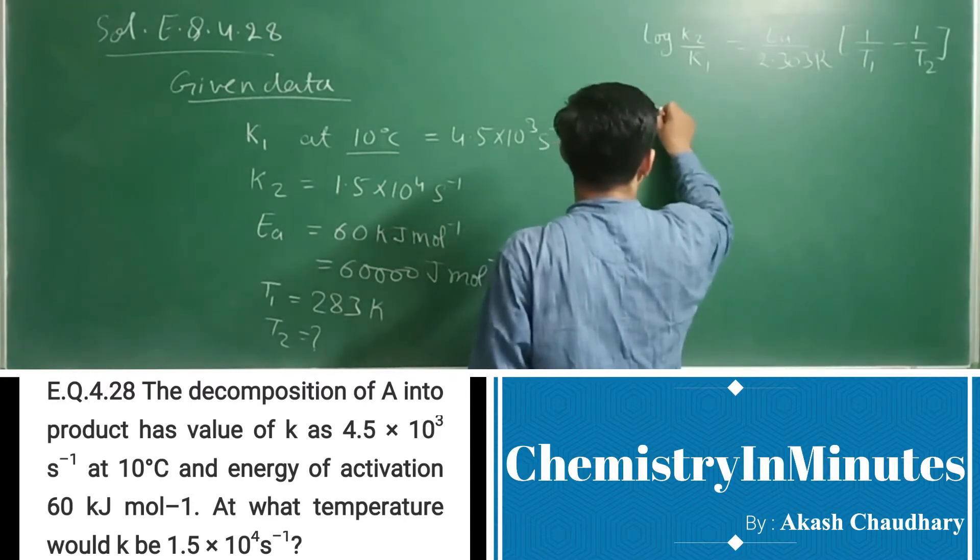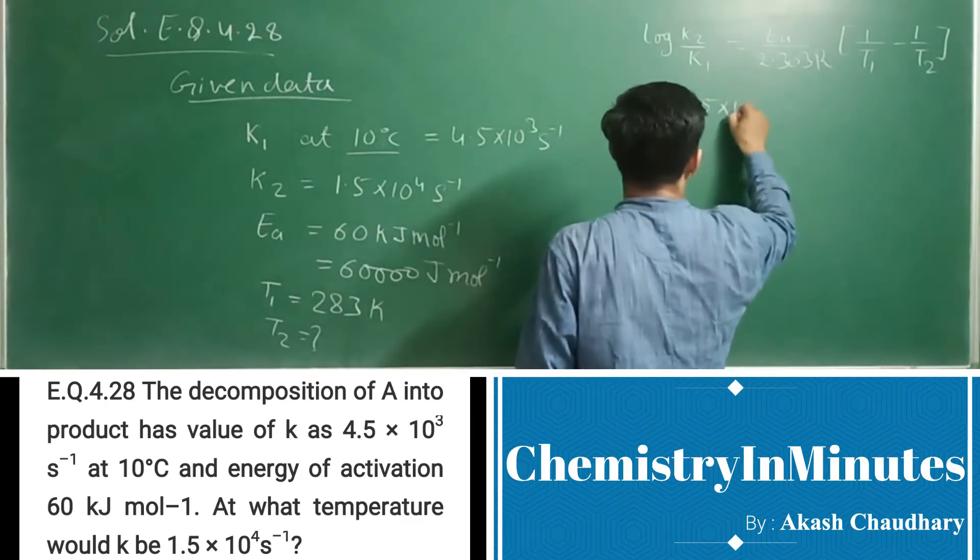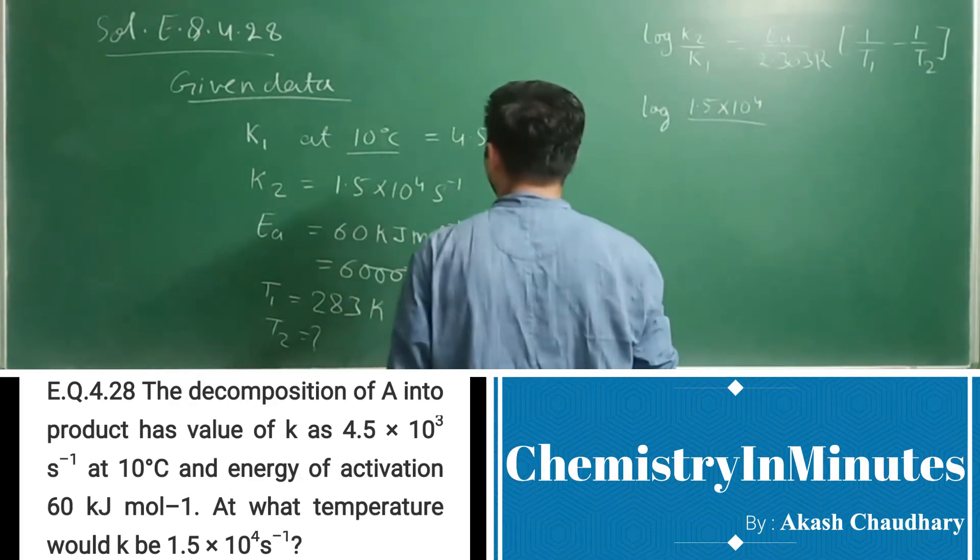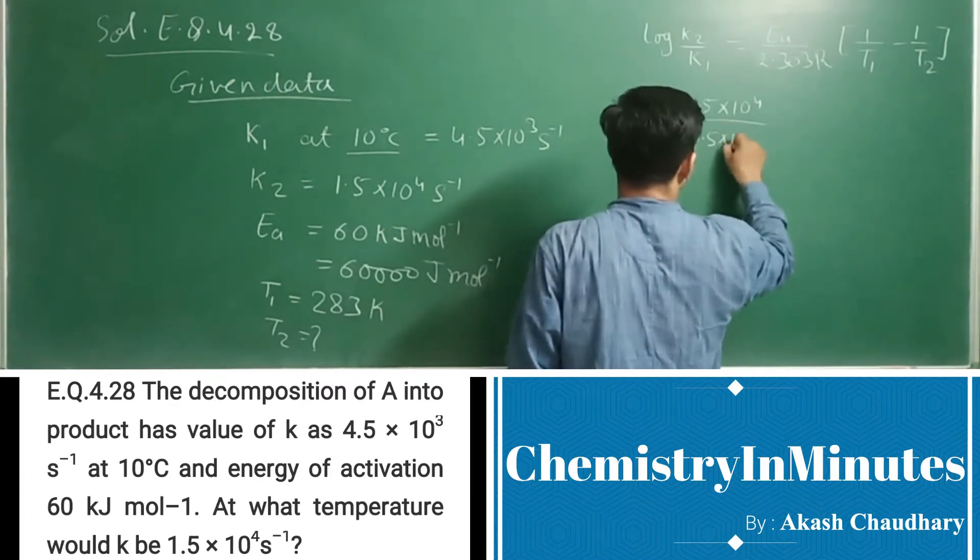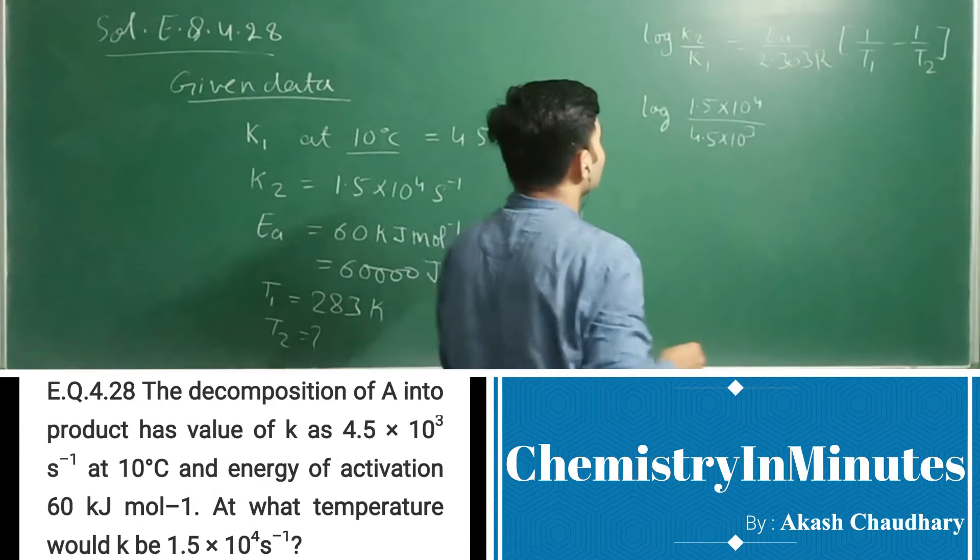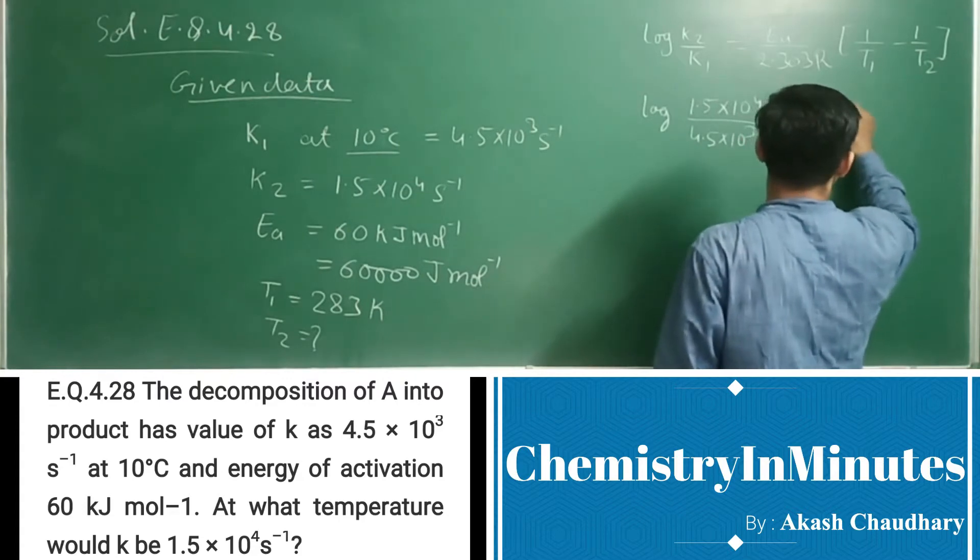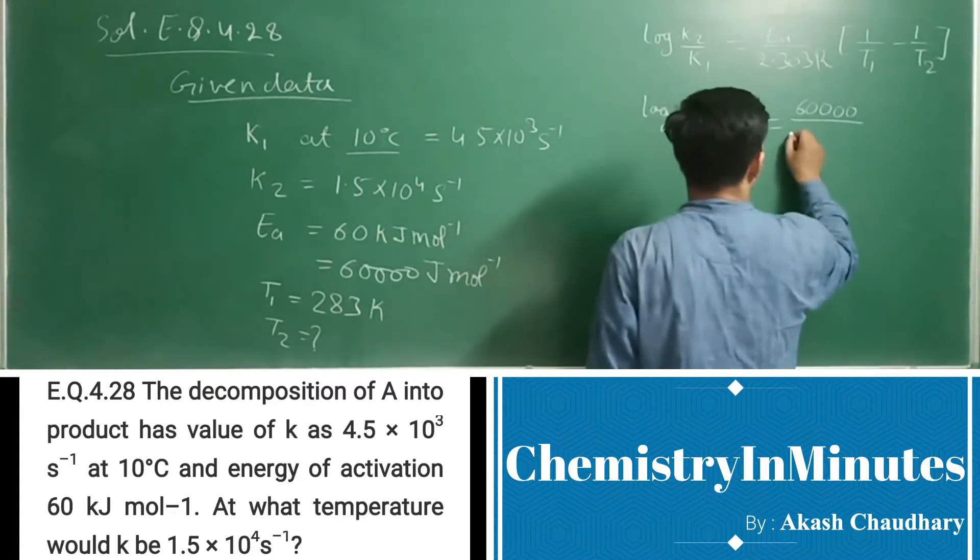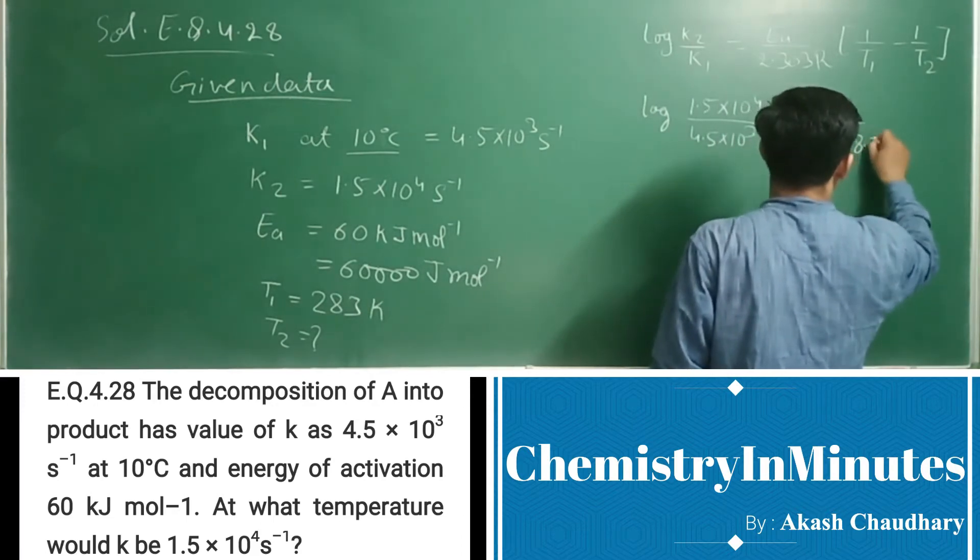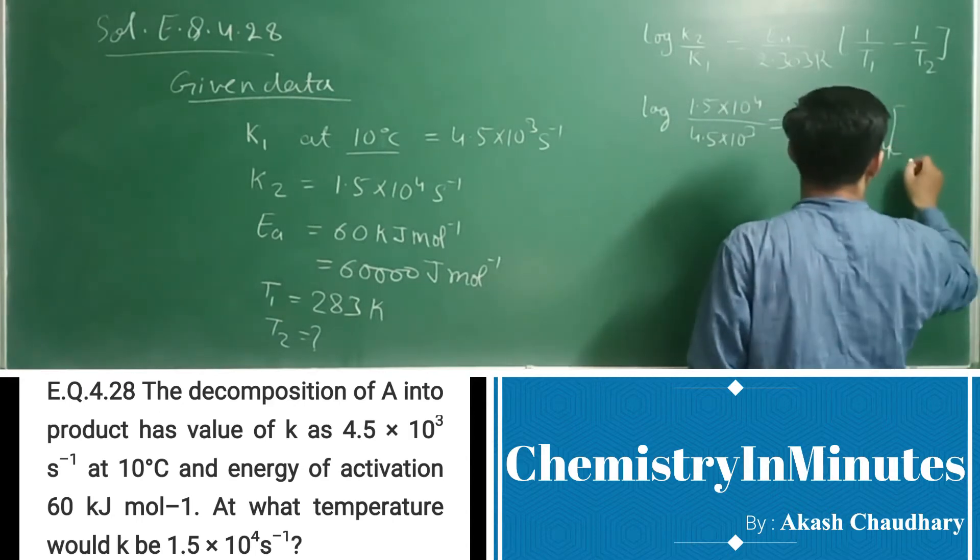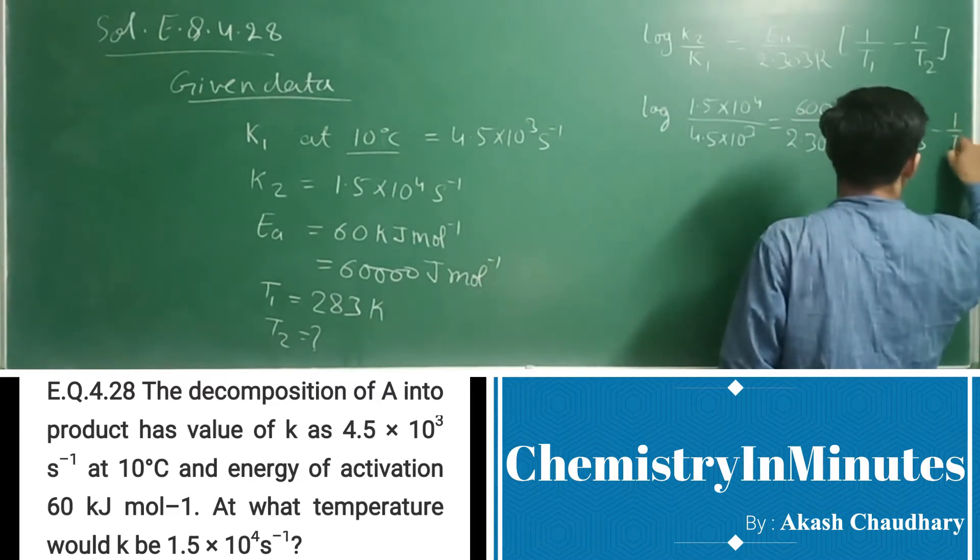Let's put the values. Log(K2/K1) is 1.5×10^4 upon 4.5×10^3, equals Ea which is 60,000 upon 2.303×8.314, times (1/T1 - 1/T2). T1 is 283 and T2 we have to find.